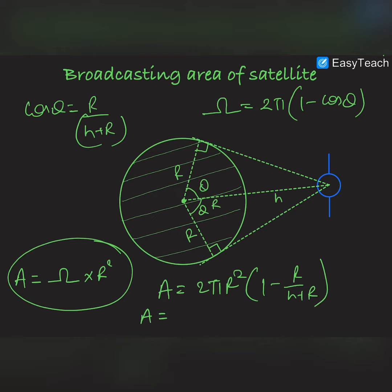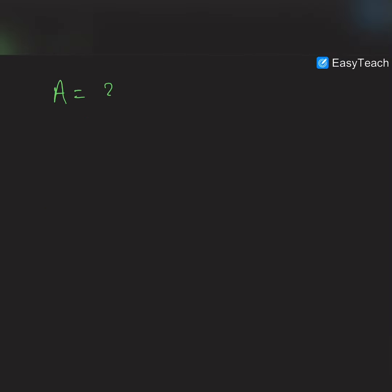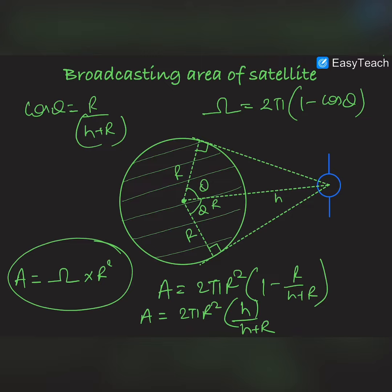So area would be equal to, taking LCM, this is 2πr squared, and LCM is h plus r, and it would be h upon h plus r. So you can see that this broadcasting area will be equal to 2πr²h divided by h plus r.